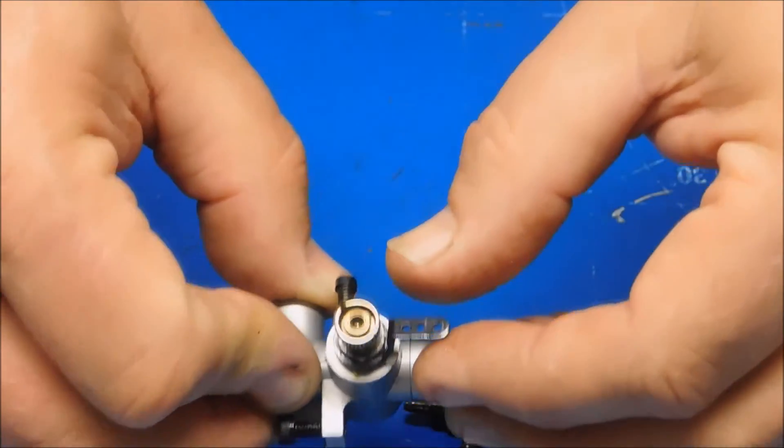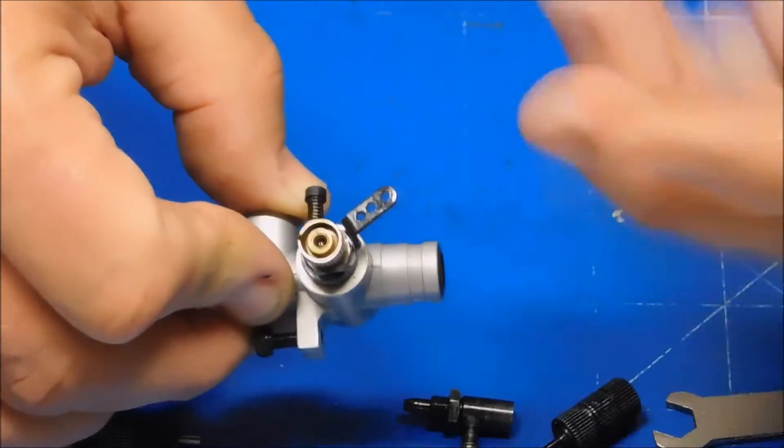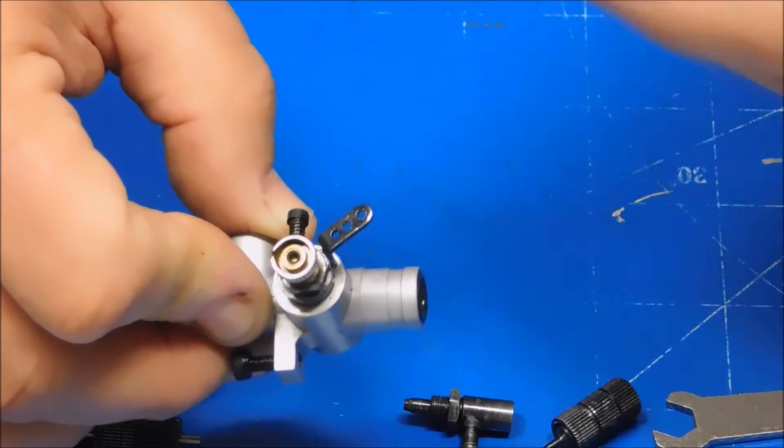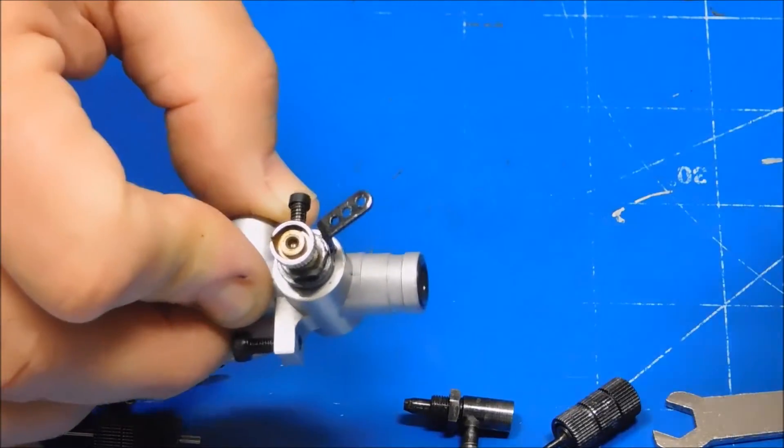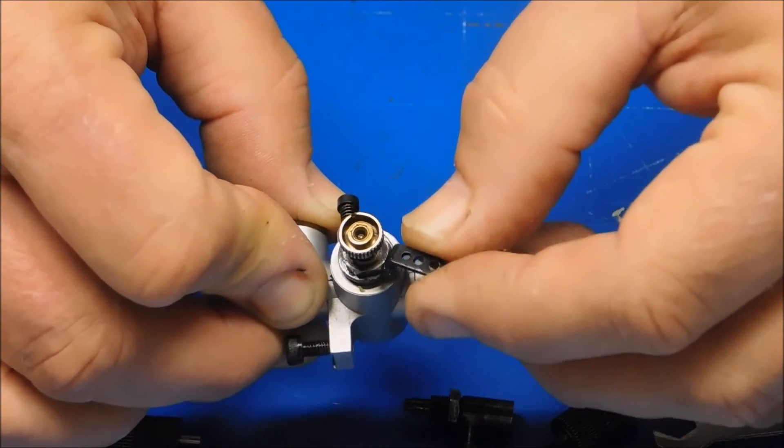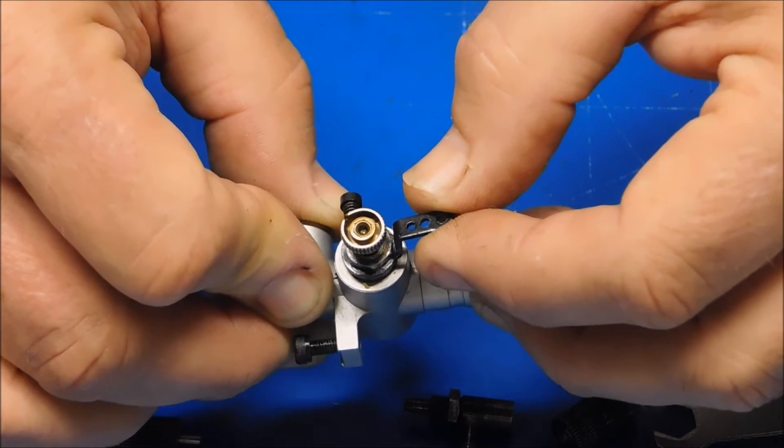I was only able to get about this much throw. I could never go past the midway point here at all because anything past that was so rich, even with that needle fully closed, it was so rich that it just wouldn't even drop RPM just because it was so blubbering rich. So my actual movement was only about this much and I could only get up to about 7200 RPM tops.